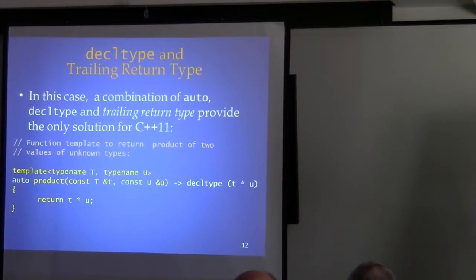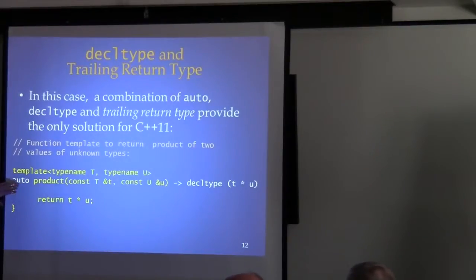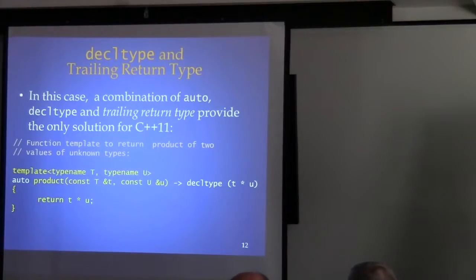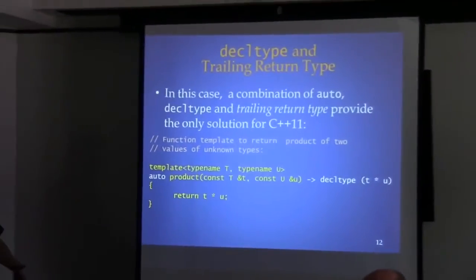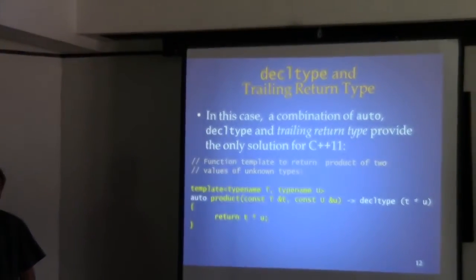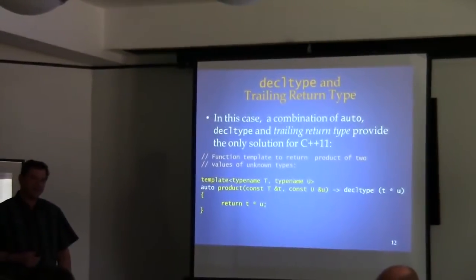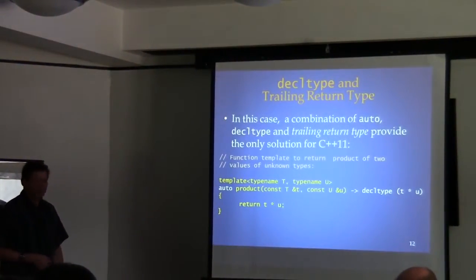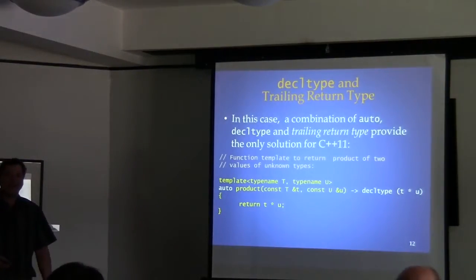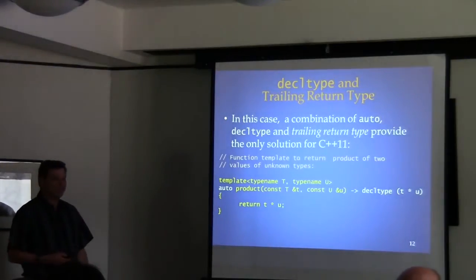Would the new use of auto break old code that used auto as a storage class keyword? Yes, absolutely — that's an example of a breaking change. But auto has been deprecated since C++98, so it's not really a problem. If you've got code with auto in the old C style, you'll need to do a little porting, but it'll be obvious — you'll get a clear syntax error, not a silent breaking change.